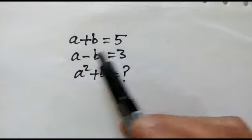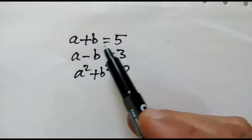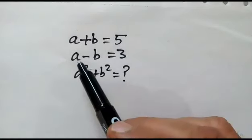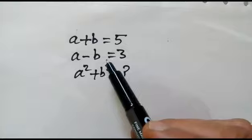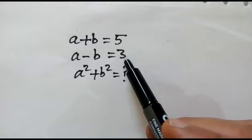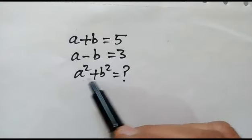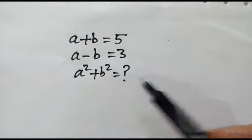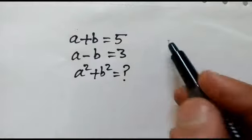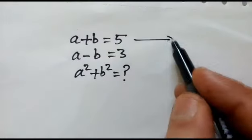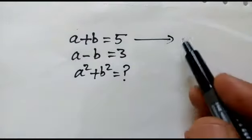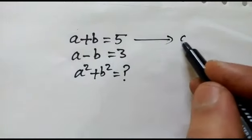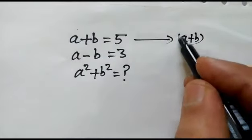Hi friends, we have given a + b = 5 and a - b = 3. We have to find out the value of a² + b².